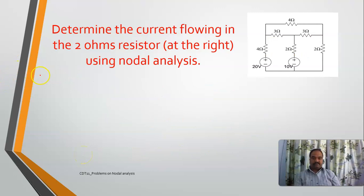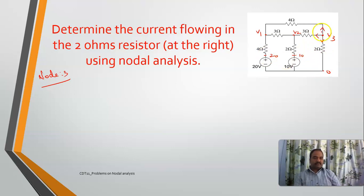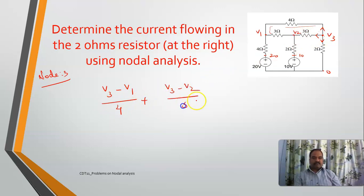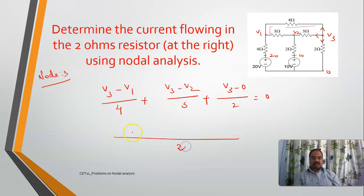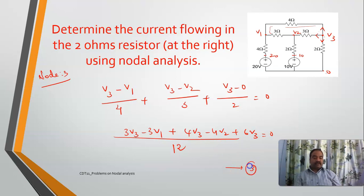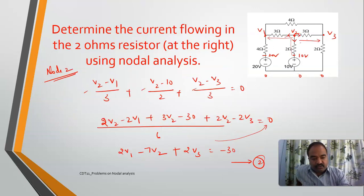Similarly for node number 3: at node 3 there are 3 paths. First path: (v3 − v1) / 4. Second path: (v3 − v2) / 3. Third path: (v3 − 0) / 2 = 0. Taking LCM = 12, we get: 3v3 − 3v1 + 4v3 − 4v2 + 6v3 = 0. Solving this gives Equation 3. Now I have 3 equations — Equation 1, Equation 2, and Equation 3.